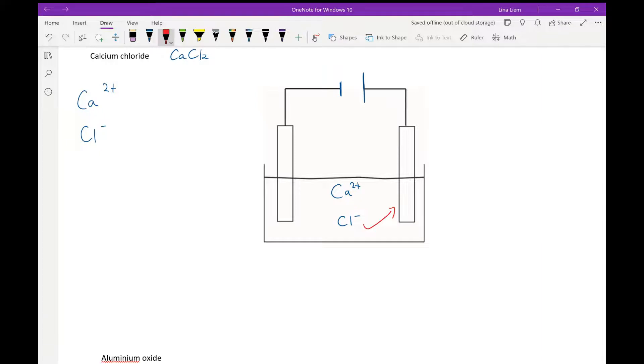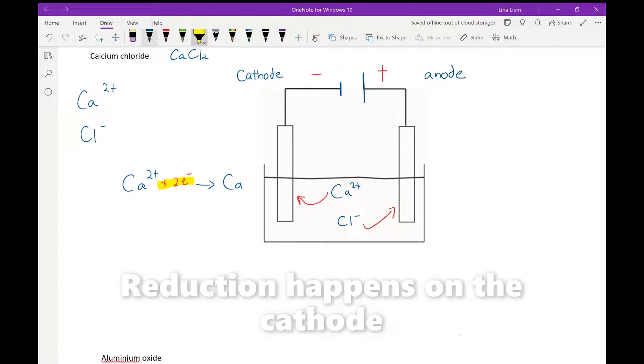Chloride is attracted to the positive electrode and calcium is attracted to the negative electrode. Now the reaction happening on the negative electrode, let's call this first cathode and this one is the anode. The reaction on the cathode: calcium ion turns to calcium metal. To balance the half equation we need to add two electrons on the left, and calcium ion gains two electrons. Gain electron means reduction.